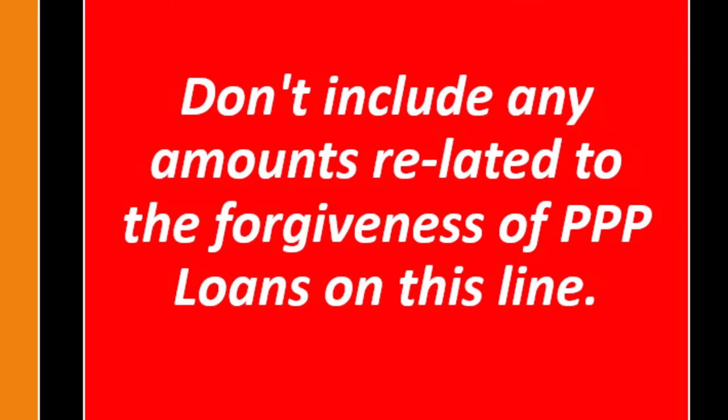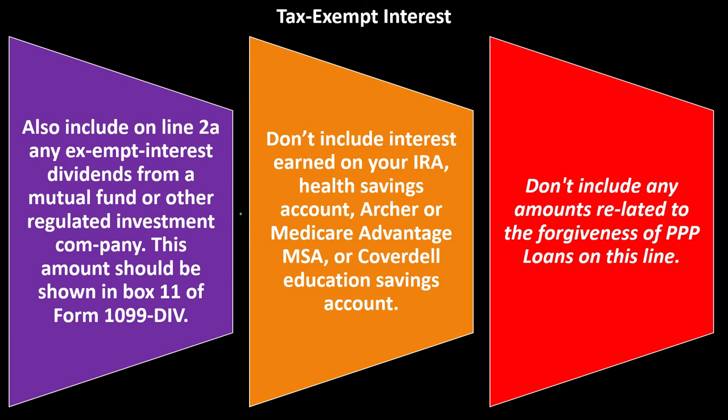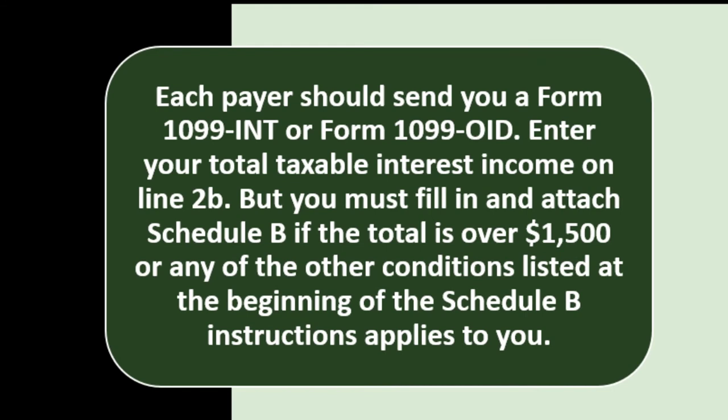Also, don't include any amounts related to the forgiveness of PPP loans on this line. PPP loans were a special condition for the last couple of years — usually a business-related situation. For interest income generally, each payer should send you a Form 1099-INT or Form 1099-OID. Enter the total taxable interest income on line 2B.